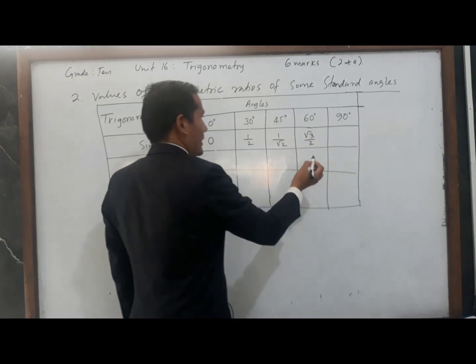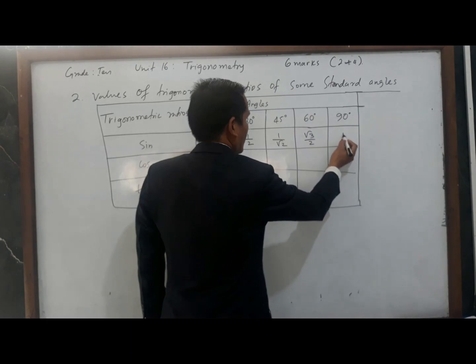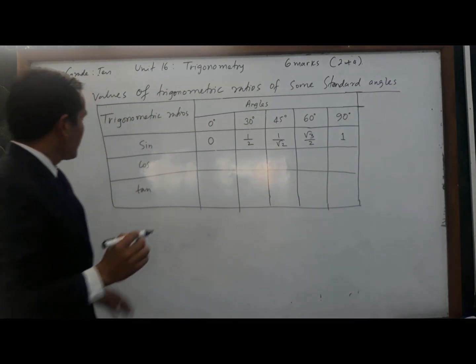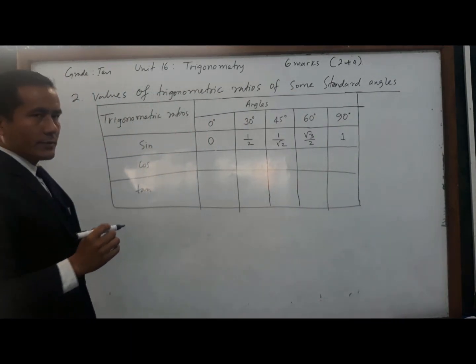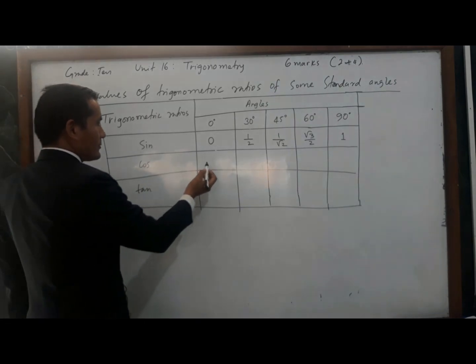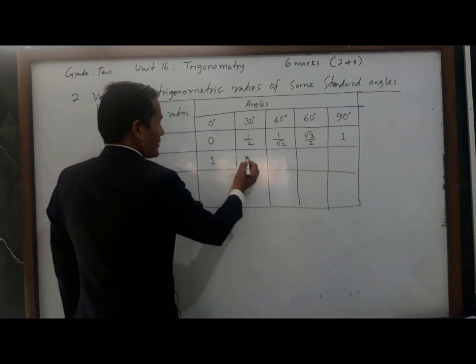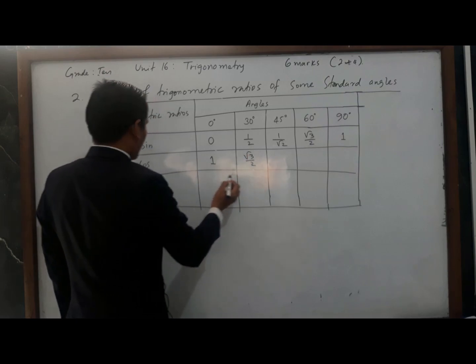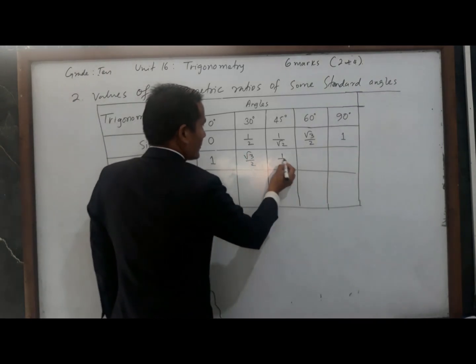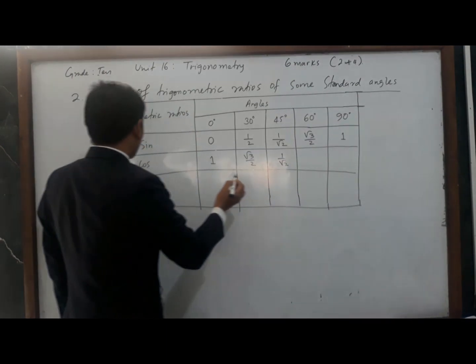Similarly, cos 0 degree equals 1. Cos 30 degree is root 3 by 2. Cos 45 degree is 1 by root 2. Cos 60 degree is 1 by 2. Cos 90 degree is 0.